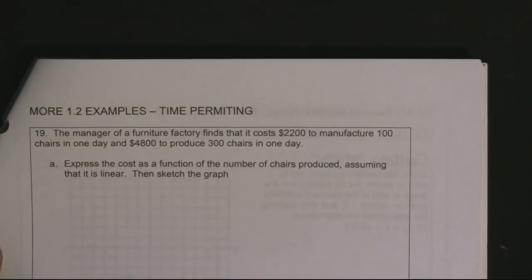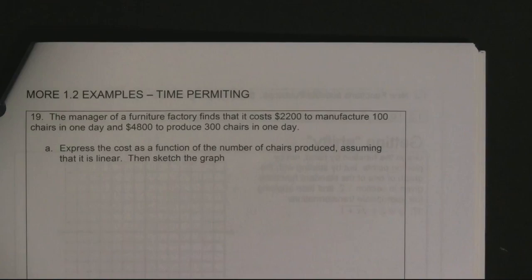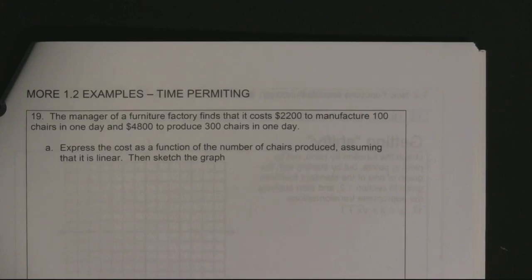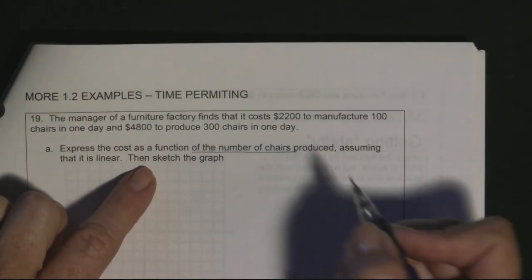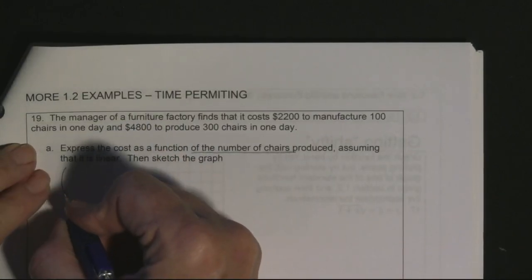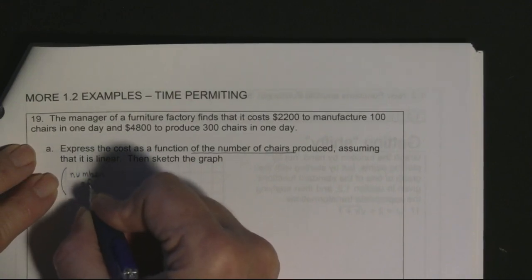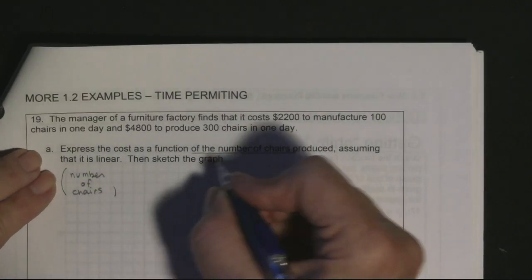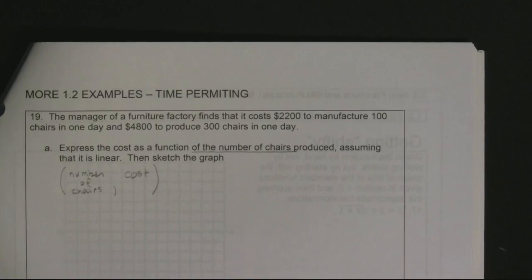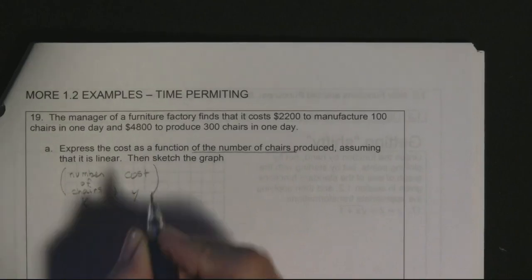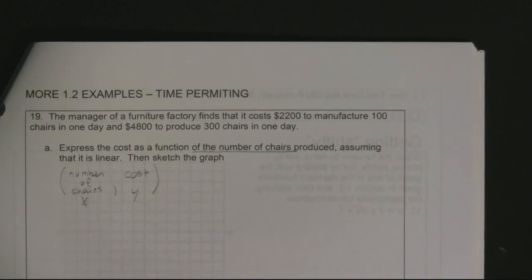Now problem 19. The manager of a furniture factory finds that it costs $2,200 to manufacture 100 chairs in one day and $4,800 to produce 300 chairs in one day. Express the cost as a function of the number of chairs produced, assuming it's linear, then sketch the graph. So x is the number of chairs and y is the cost.